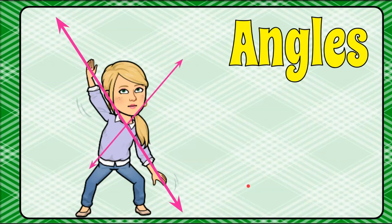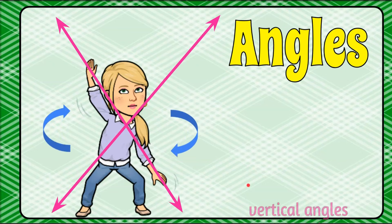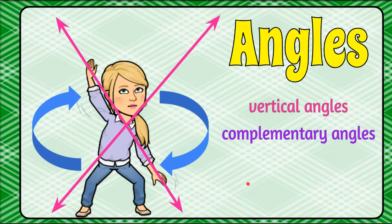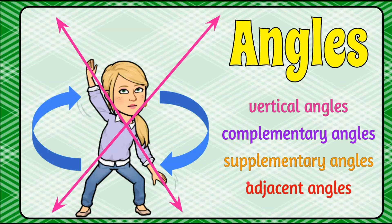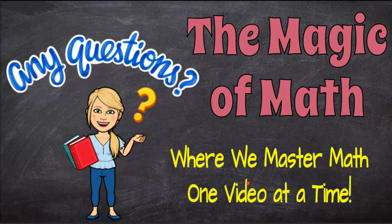And there you have it — angles formed by intersecting lines, including vertical angles, complementary angles, supplementary angles, and adjacent angles. Thank you for joining me today at The Magic of Math, where we continue to master math one video at a time. I hope you come back soon and have a great day.